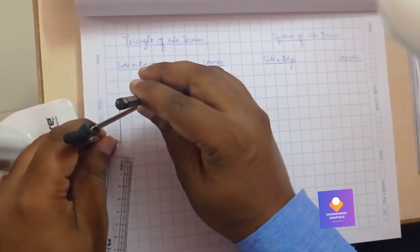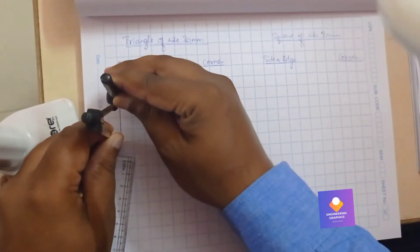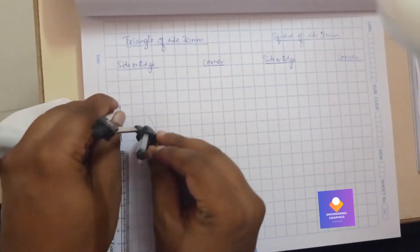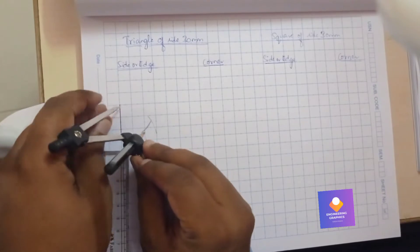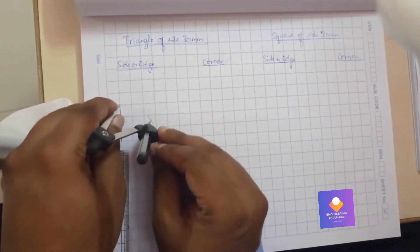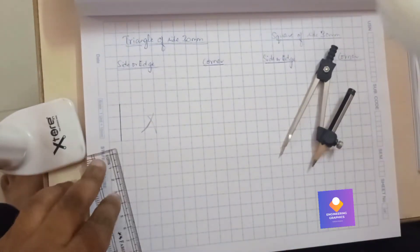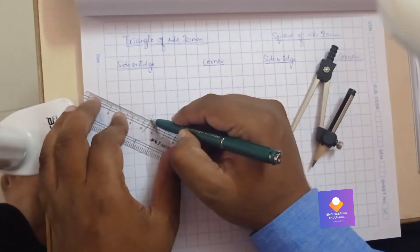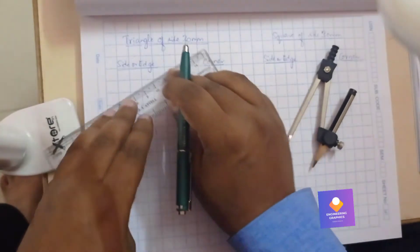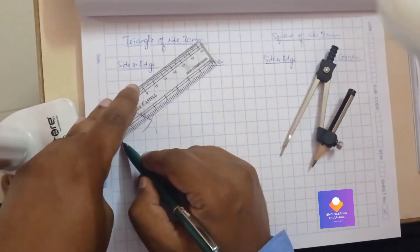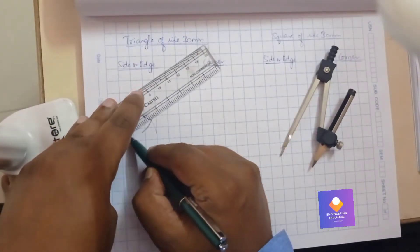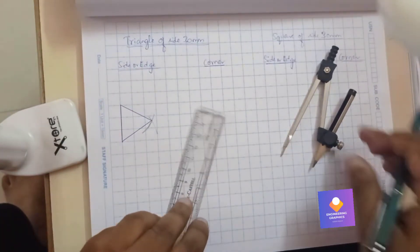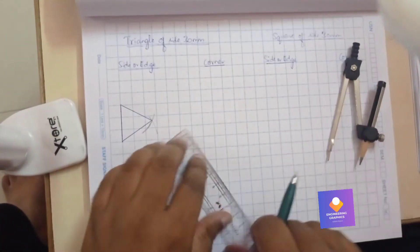We are going to cut the arc from both the ends. So that is the first arc, now is the second arc, so we can join. That completes the triangle with respect to side or with the edge position. Okay, triangle with respect to edge or side position. Now we will construct the same triangle with respect to the corner position.